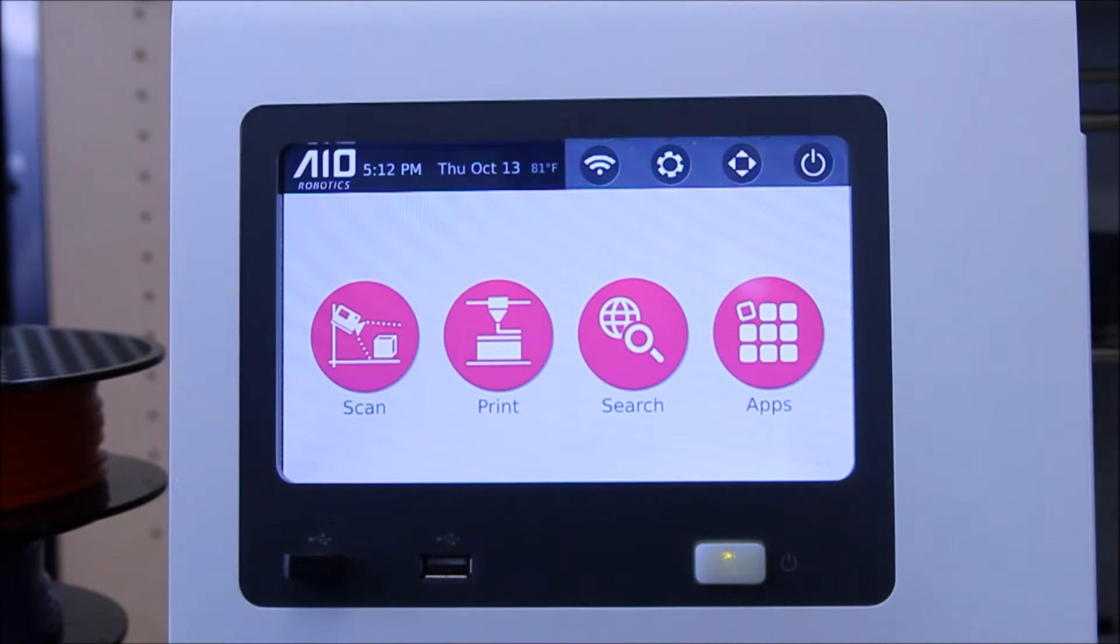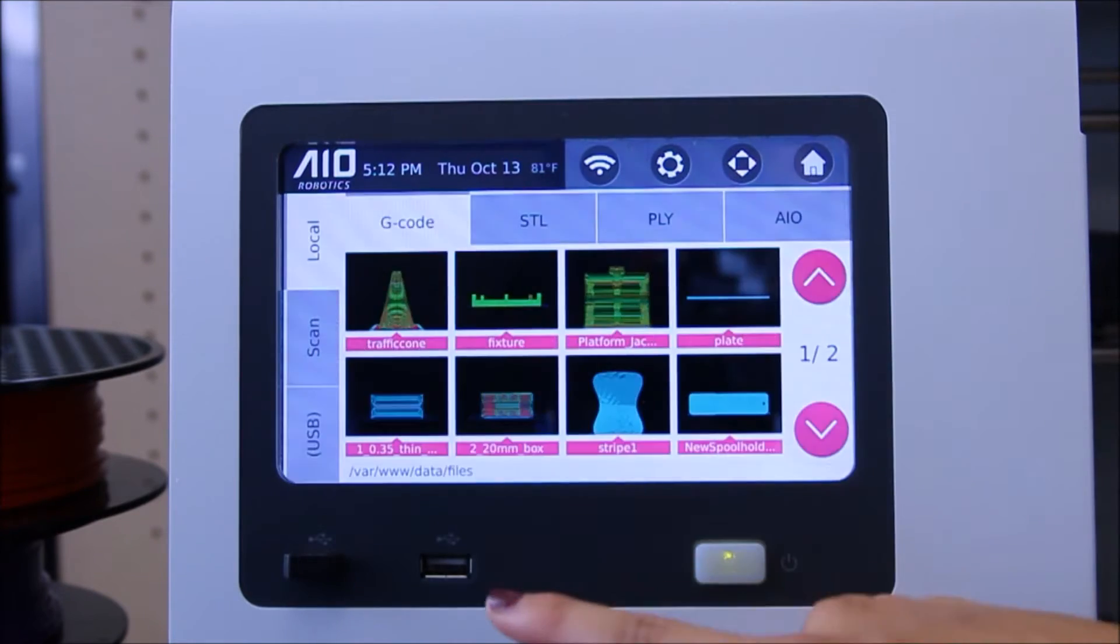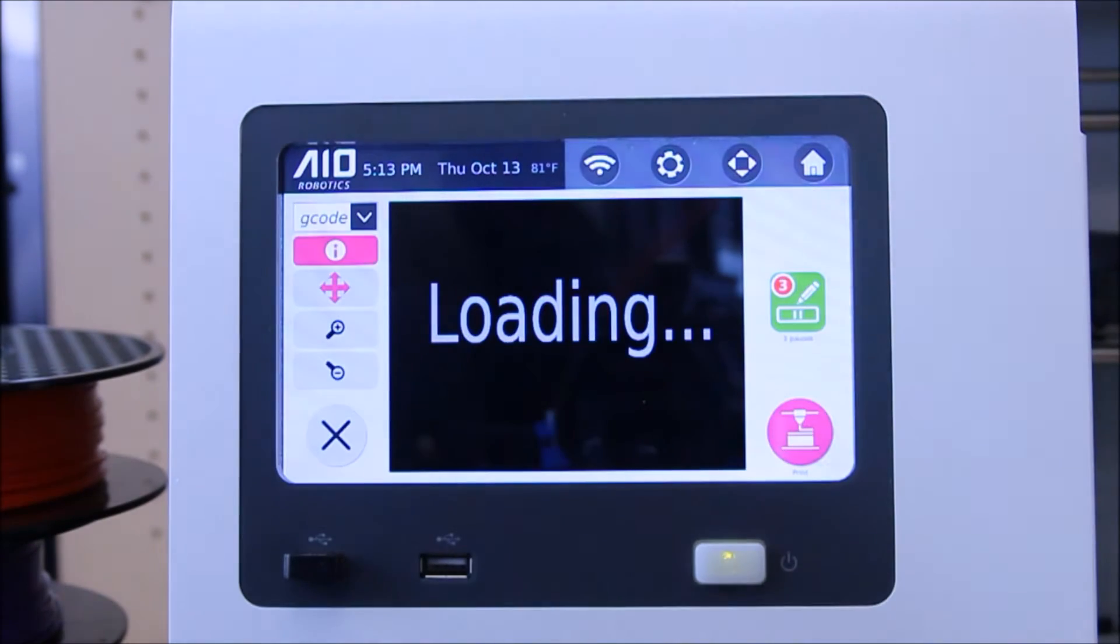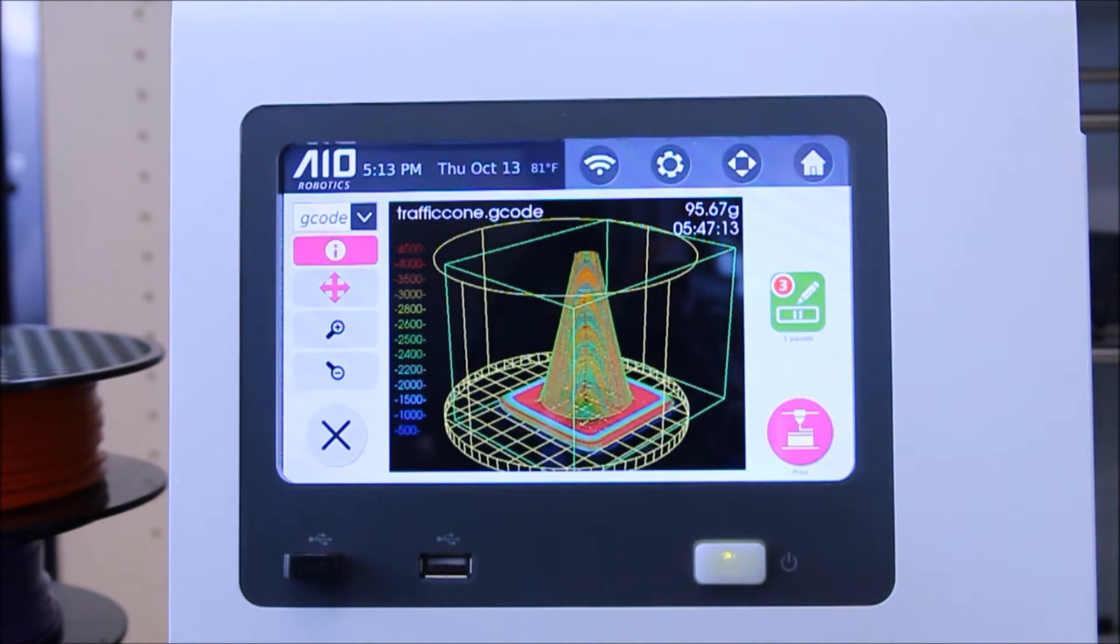From your home screen, simply select the print option and choose your desired file, then choose the Pause Editor button shown here on the right.